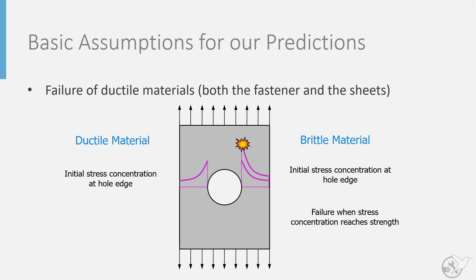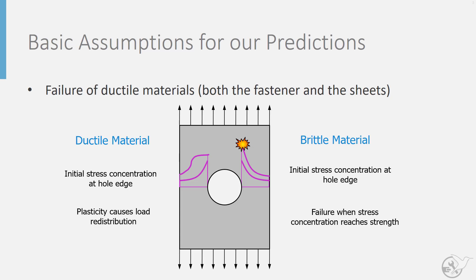In a ductile material things are a little bit different. It will not suddenly fail; rather, as we increase the load, the material will start to yield or plastically deform, which will cause a redistribution of stress along the width of the plate. It is a simple approximation that at final failure you will have a uniform stress along the width of the plate equal to the ultimate strength of the material. This allows us to ignore the stress concentration of the hole and just utilize the fact that plasticity will redistribute loads and result in an approximately uniform stress equal to the ultimate strength at final failure.